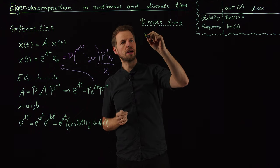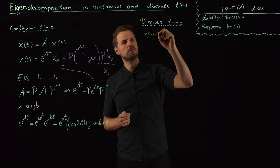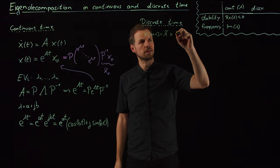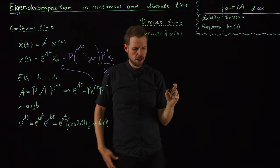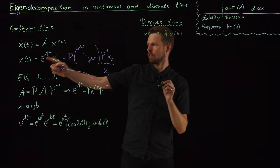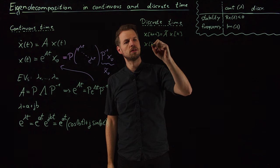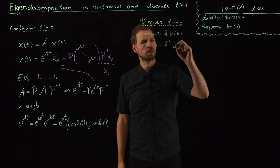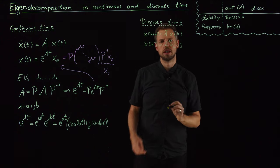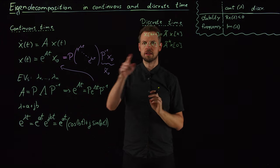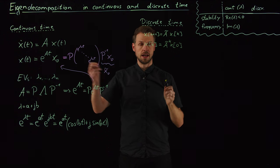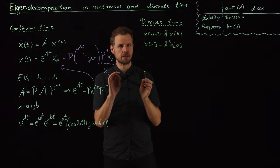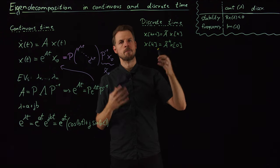Now let's relate this to discrete time systems. We have x(k+1) = Ã times x(k). I'm going to relate Ã to A in a moment. In the same way as before, x(k) in general can be computed by simply raising Ã to the k-th power times x at zero. So you can see a very close relation. What does this Ã have to do with A? We'll go step by step, relate Ã to A, then relate the corresponding eigenvalues, and study what properties discrete systems need for stability and to determine their frequency.